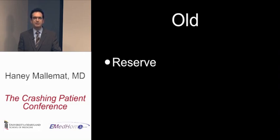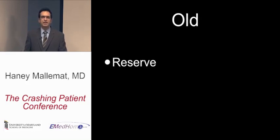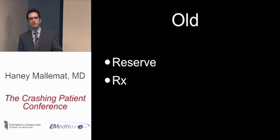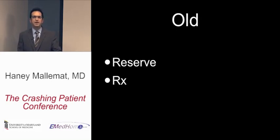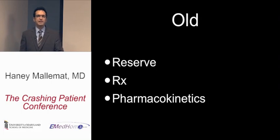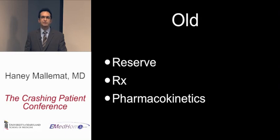Old patients at baseline have little cardiopulmonary reserve. They may have cardiac disease, weakened systolic or diastolic function, and a reduction in pulmonary reserve and function. They're also on medications — antihypertensive medications that might blunt their response to critical illness, and diuretics that decrease their preload. Older patients also have altered pharmacokinetics due to liver or kidney disease, making it unpredictable how they'll react to the medications we administer.